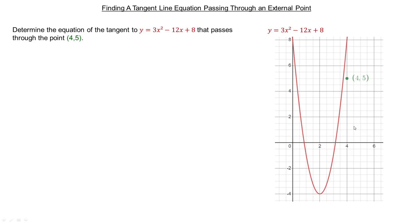I do some math tutoring and I've seen a little bit of a variation on that recently. Here's our curve: the parabola y equals 3x squared minus 12x plus 8. The question is to find the equation of a tangent not at a point on the curve, but the equation of a tangent to this parabola that passes through some external point. The external point in this case is (4, 5).